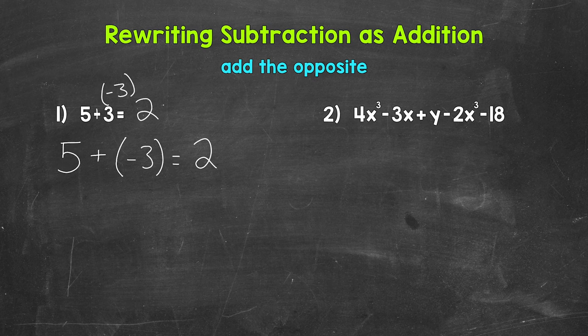So let's rewrite this algebraic expression so all of the terms are separated by addition. So we are going to rewrite all subtraction as addition. So again, we need to add the opposite. So let's find all of the subtraction within this algebraic expression and add the opposite.